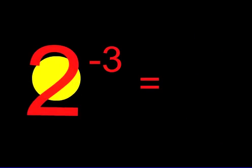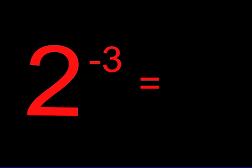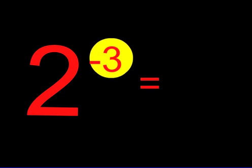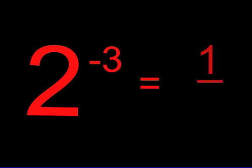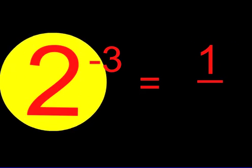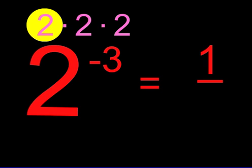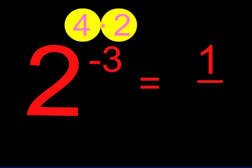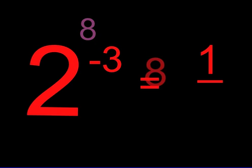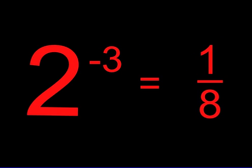Let's try the last problem. We have two to the negative three. Once again, we see the exponent is negative, so we know we are dividing one into pieces. Two to the third power is two times two times two. Two times two is four, four times two is eight. So our answer is one over eight, which is one eighth.